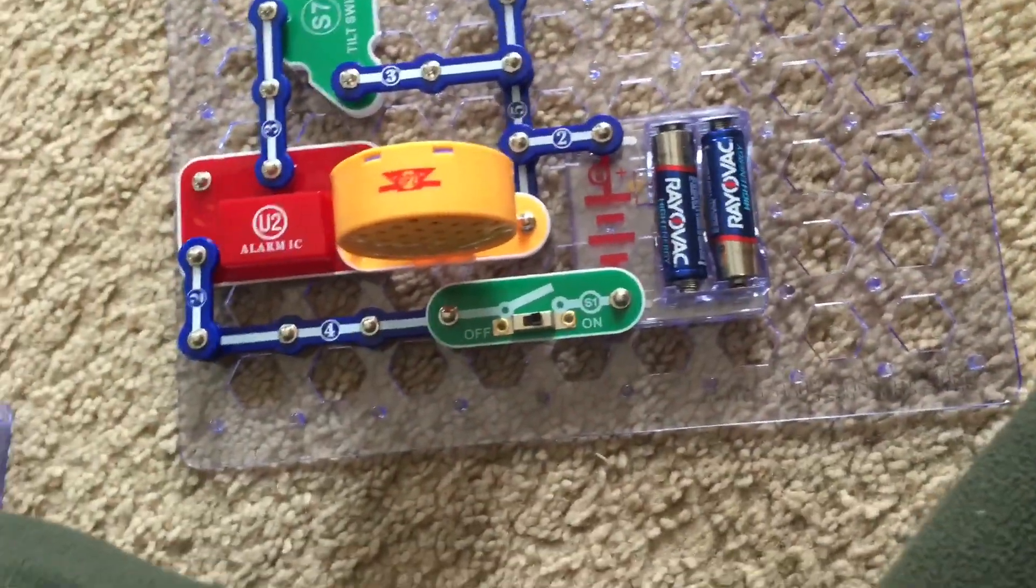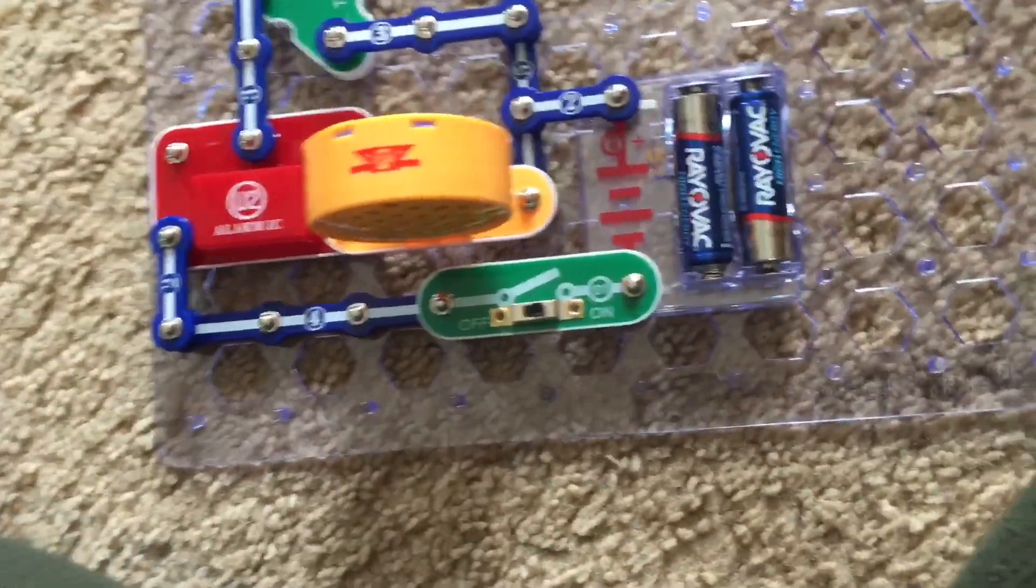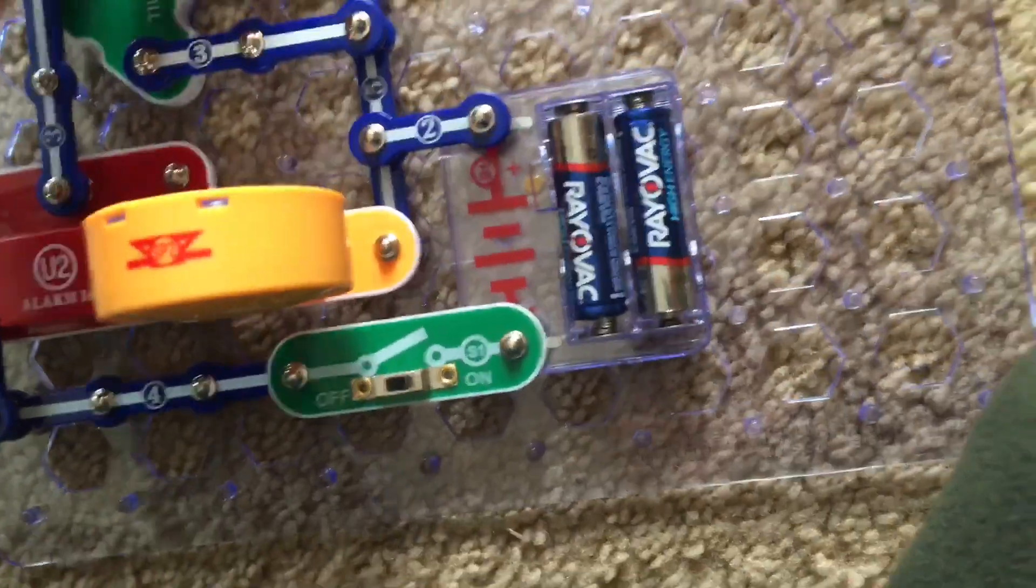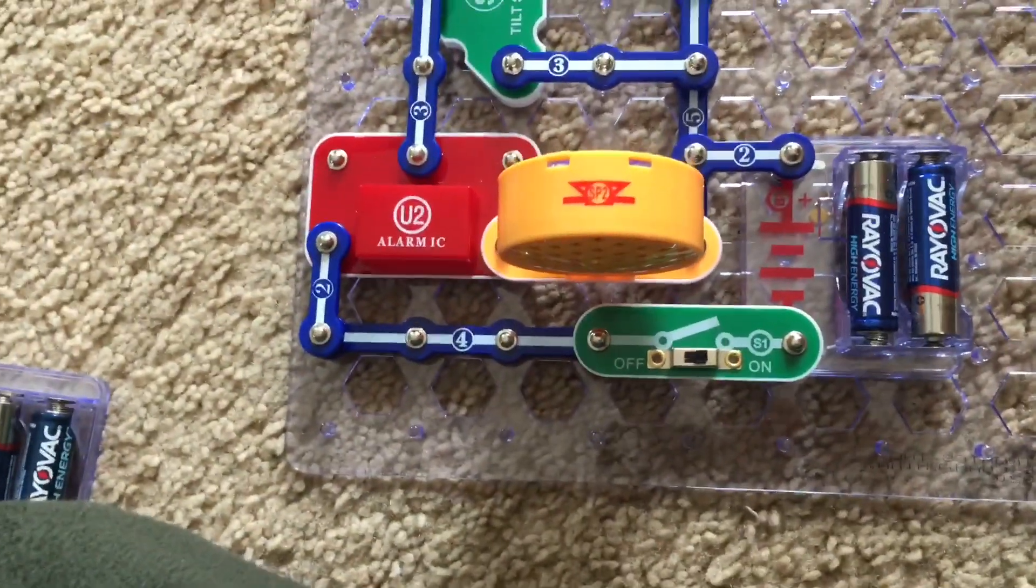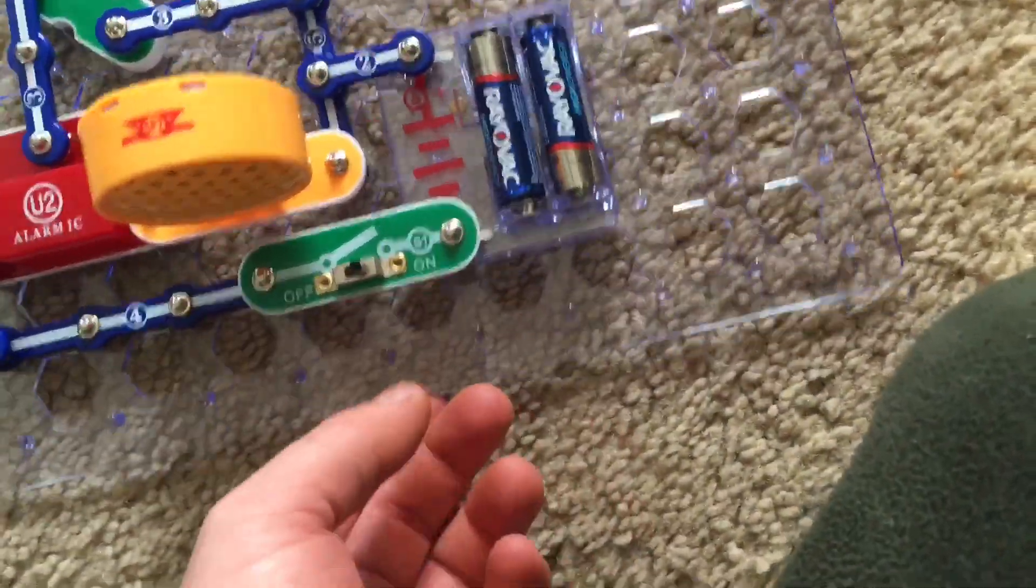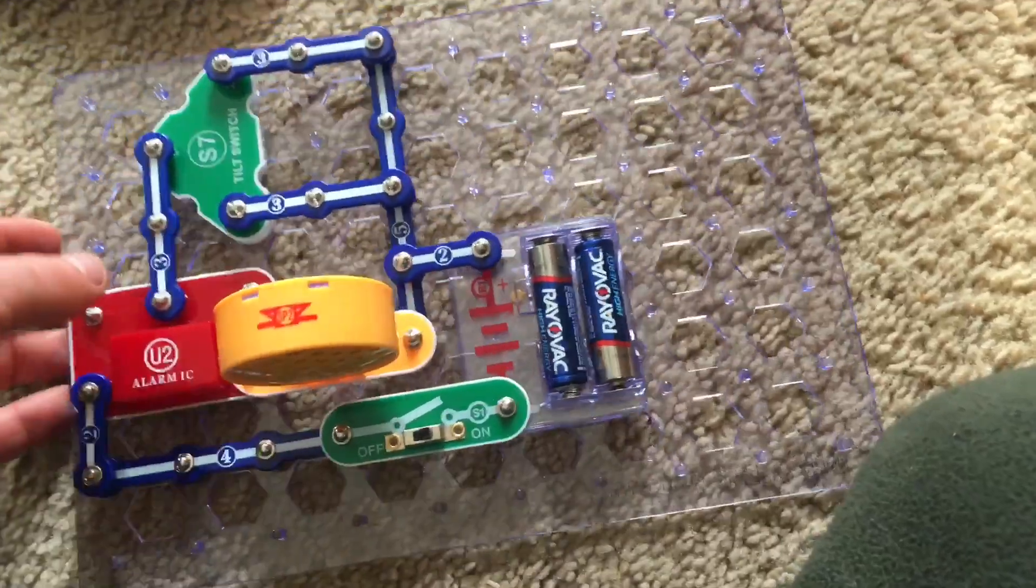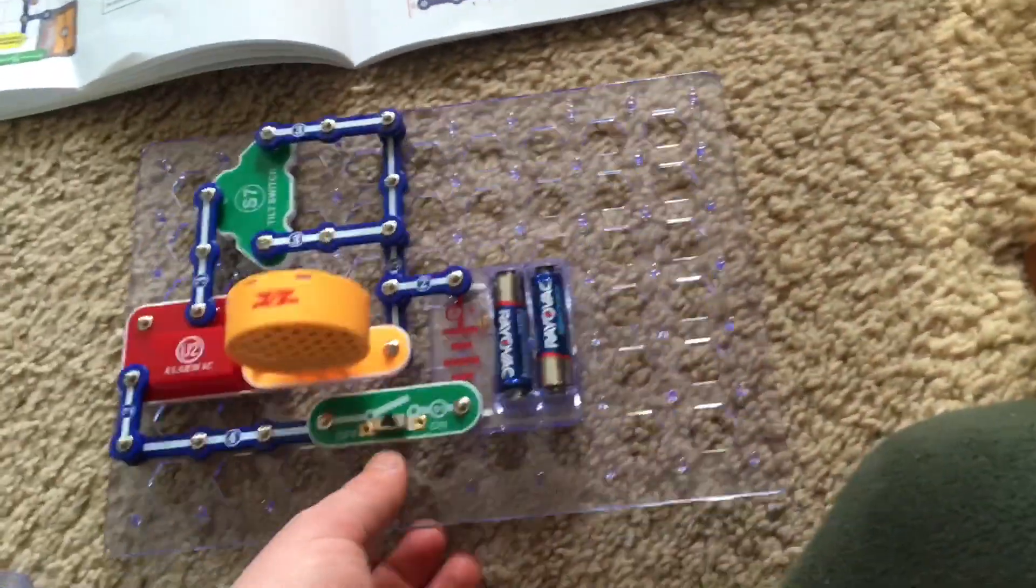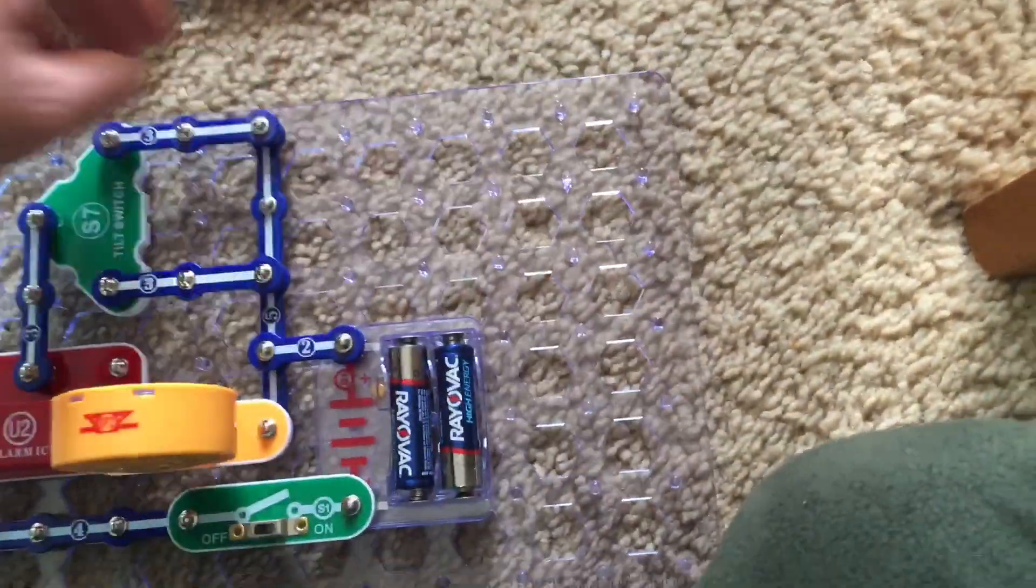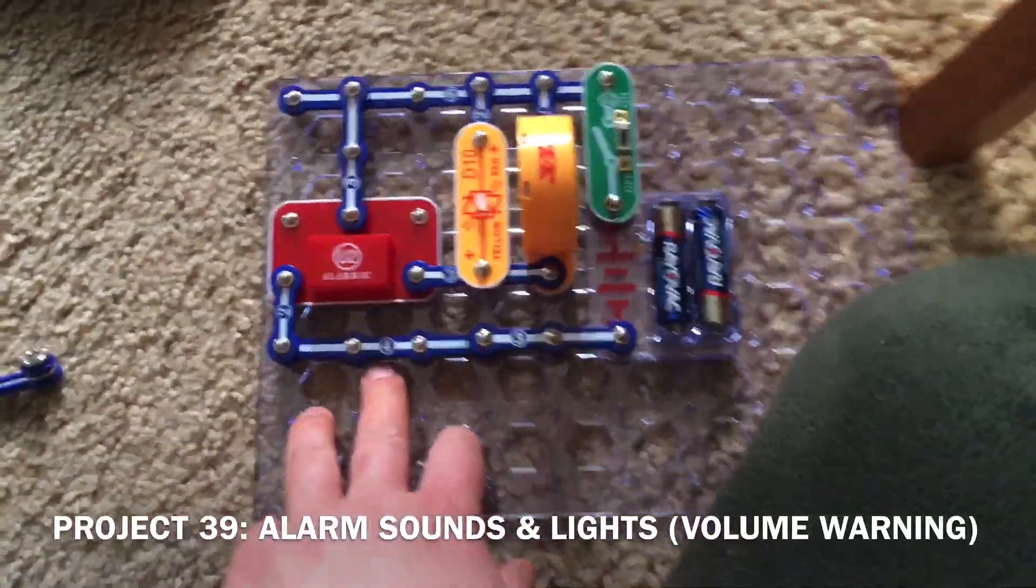Now if you were to place a three snap wire between points A and B as well as C and D the circuit may be so sensitive that the alarm could be difficult to turn off. Right now it doesn't seem that way but you may notice that it sounds more when I tilt it from many different directions unlike the previous two times. Project 39 is alarm sounds and lights.